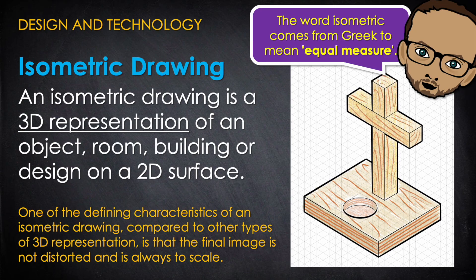Isometric sketching is a technique used to represent three-dimensional objects in two dimensions. This method is especially useful for designers and engineers because it allows for a clear and precise depiction of objects showcasing all three dimensions without distortion.